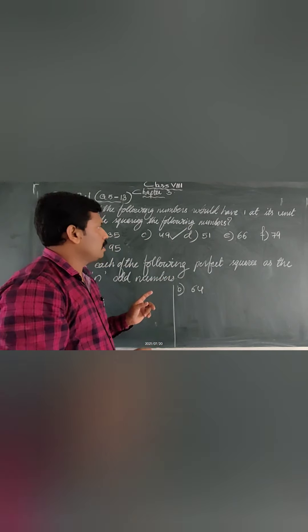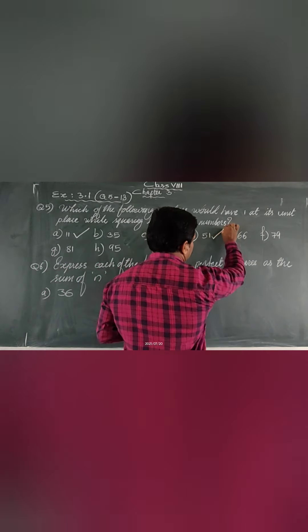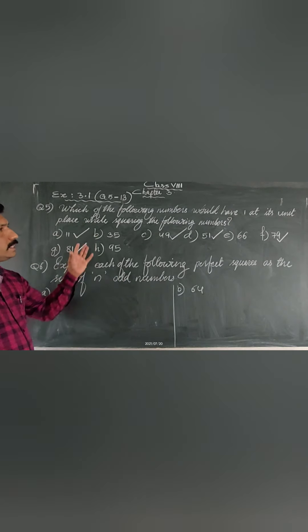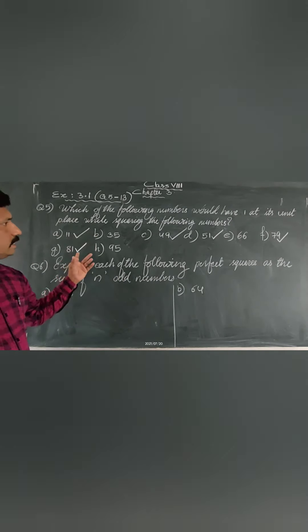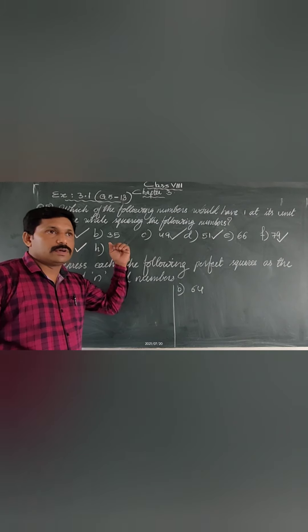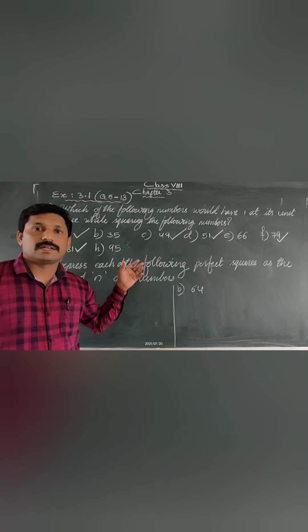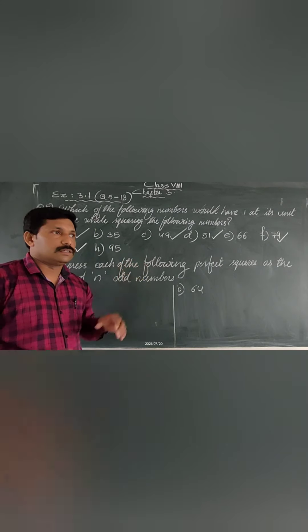In the properties of squares, a number ends with 1 in its square if its unit digit is 1 or 9. So here: 11 ends in 1, therefore its square's unit place will be 1. 49 ends in 9, therefore its square's unit place will be 1. 51 ends in 1, therefore its square's unit place will also be 1. By using the properties of squares, we can directly pick out the numbers whose squares end with unit digit 1.